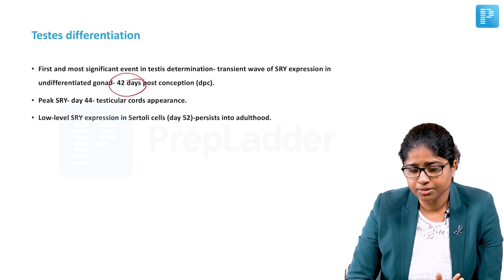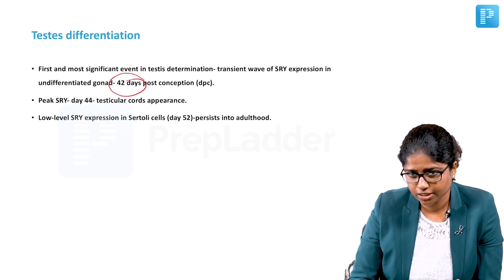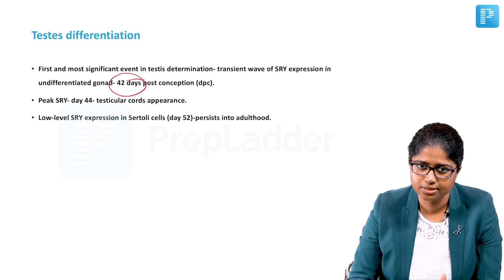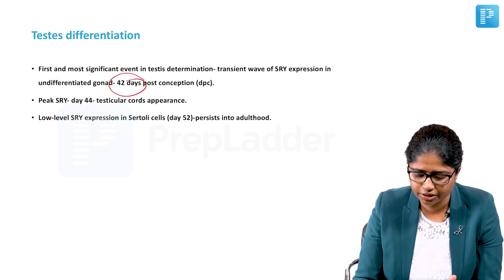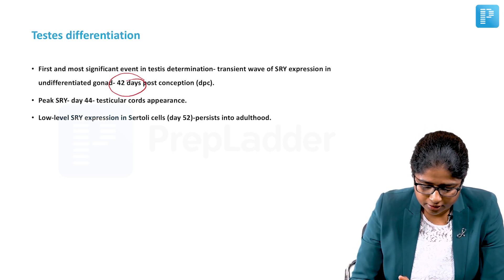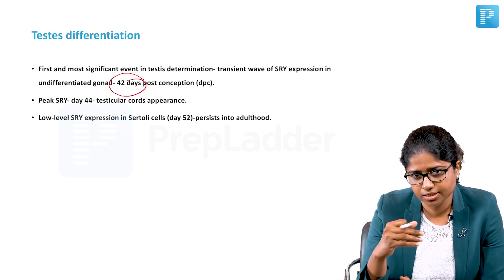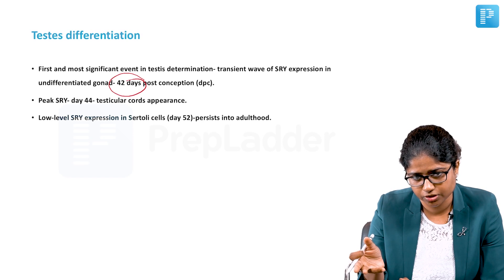The first event that happens is a transient wave of SRY expression. As I talked about, the SRY gene is one of the most important genes for testis determination, and so there is a transient wave of SRY expression in the undifferentiated gonad which sets off the process in the direction of testicular determination.